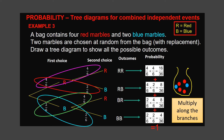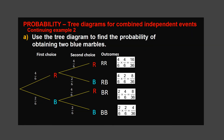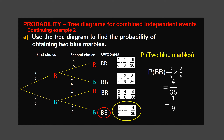Now let's see how we use the tree diagram to calculate the probability of specific outcomes. A: Find the probability of obtaining two blue marbles. There is only one chance of obtaining two blue marbles. Along the branch, we multiply their probabilities. The answer is 4 over 36, which after reducing gives 1 over 9.